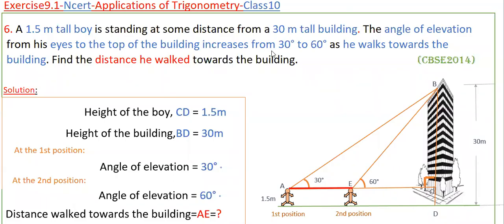Hello everyone. Today I am going to tell the solution of the sixth problem from Exercise 9.1 from NCERT, Applications of Trigonometry, Class 10. A 1.5 meters tall boy is standing at some distance from a 30 meters tall building. The angle of elevation from his eyes to the top of the building increases from 30 degrees to 60 degrees as he walks towards the building. Find the distance he walked towards the building.